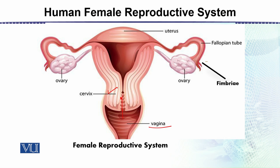The uterus has very thick membranes, including the Myometrium and the Endometrium. The cavity of the uterus is where the development of the child takes place.